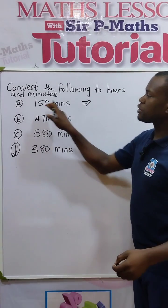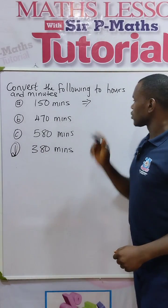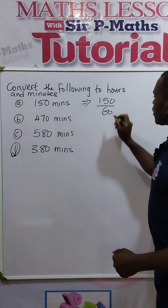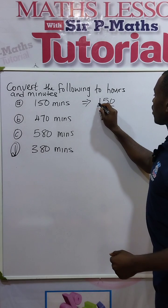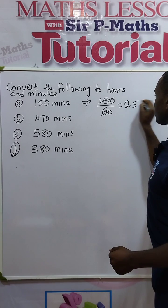Now to convert minutes to hours, divide the minutes by 60. So I'll have 150 divided by 60. If I divide 150 by 60, I will have 2.5.